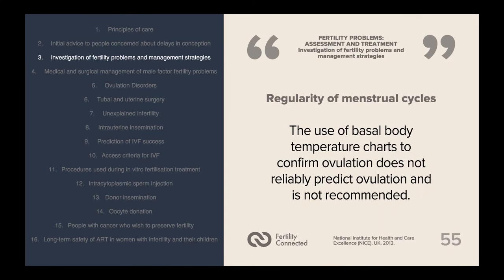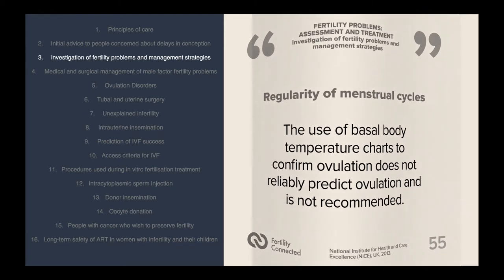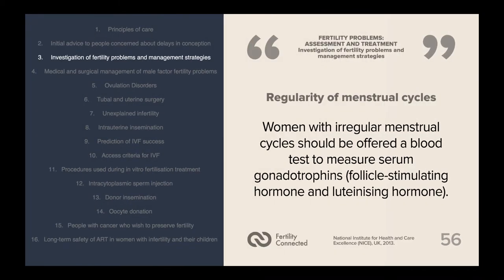The use of basal body temperature charts to confirm ovulation does not reliably predict ovulation and is not recommended according to NICE. Women with a regular menstrual cycle should be offered a blood test to measure serum gonadotrophins, including FSH (follicle stimulating hormone) and LH (luteinizing hormone).